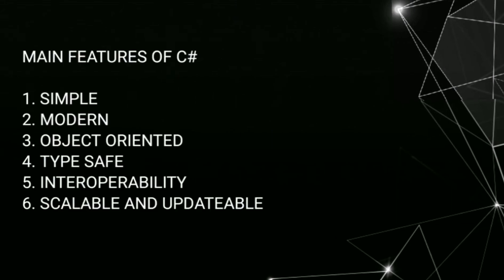Main features of C sharp: 1. Simple, 2. Modern, 3. Object oriented, 4. Type safe, 5. Interoperability, 6. Scalable and updatable. Now we'll explain one by one in detail.